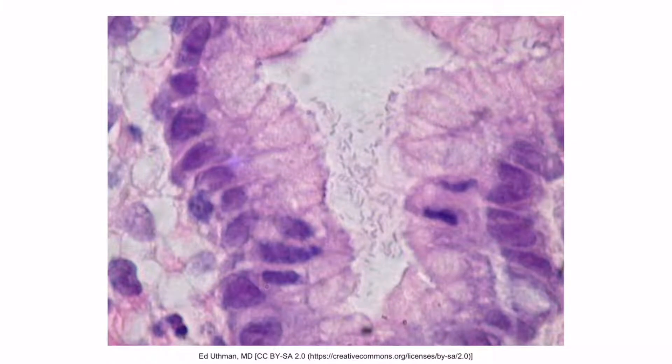This is a hematoxylin and eosin, or H&E, stain of the gastric mucosa. If you look at the center of the image, you can see little curved bacilli right here, right next to the gastric mucosa. An organism directly adjacent to the gastric mucosa is pathognomonic for H. pylori, so this is often used on tests to assess your knowledge of H. pylori rather than a gram stain.